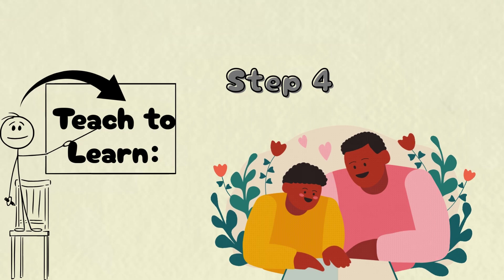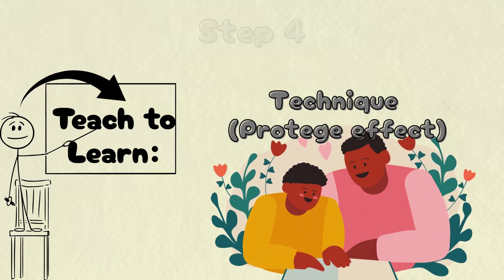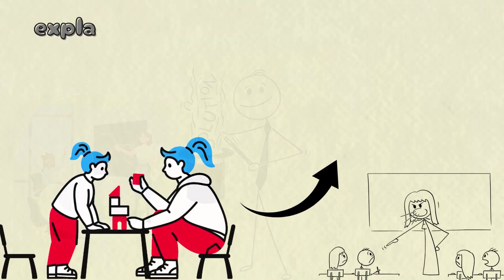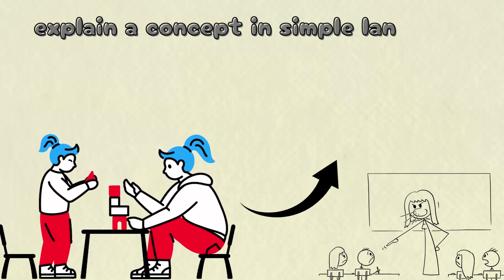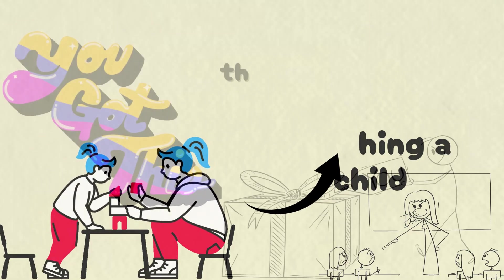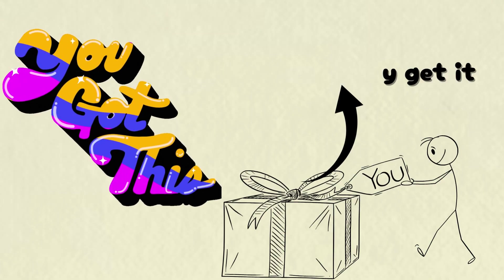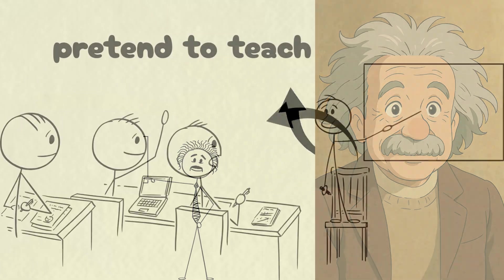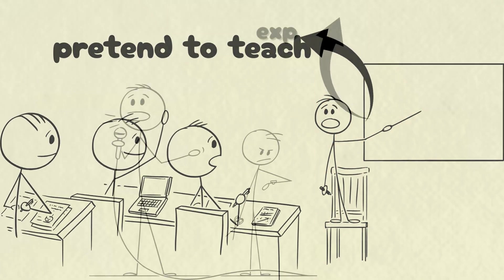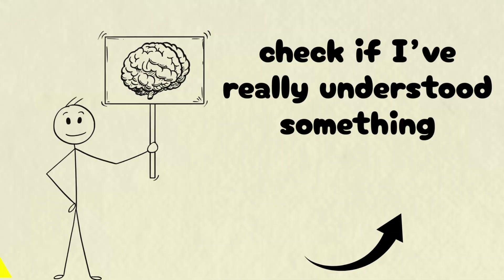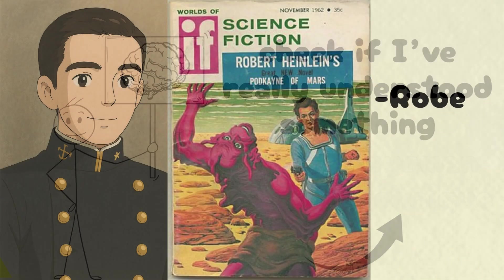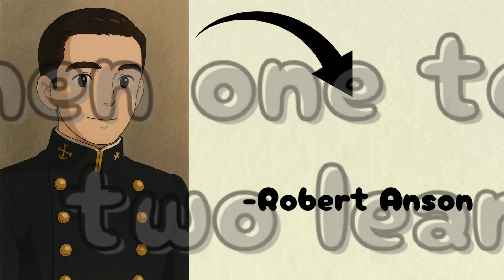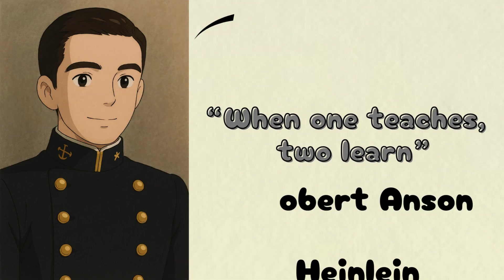Step 5. Teach to Learn the Feynman Technique or Protégé Effect. The Feynman Technique is a powerful method to test your understanding. If you can explain a concept in simple language as if teaching a child, then you truly get it. Albert Einstein said, if you can't explain it simply, you don't understand it yourself. I often use this by pretending to teach or by explaining concepts to friends when they ask questions. It's a great way to check if I've really understood something. That's why famous science fiction author Robert Heinlein rightly said, when one teaches to learn the real problem.